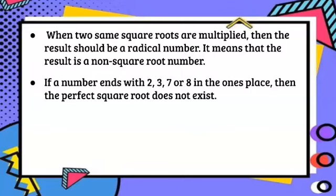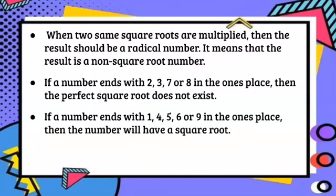If a number ends with 2, 3, 7, or 8 in one's place, then the perfect square root does not exist. And if a number ends with 1, 4, 5, 6, or 9 in one's place, then the number will have a perfect square root.